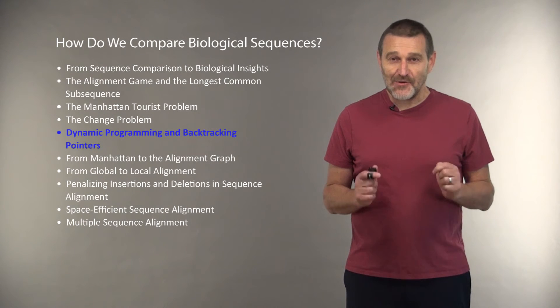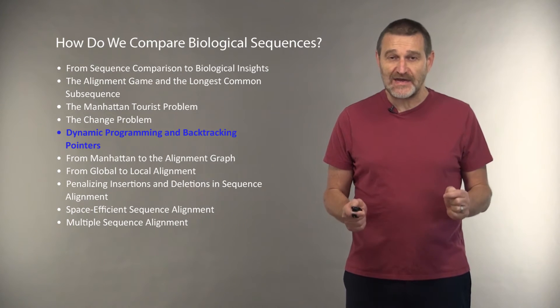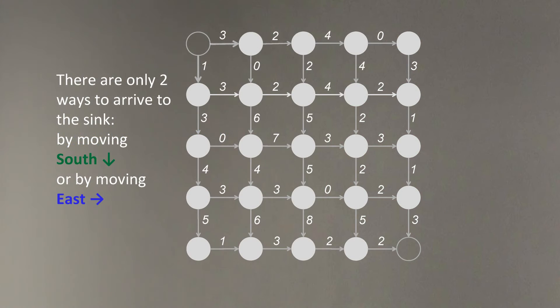We are now ready to learn how dynamic programming algorithms work for finding optimal paths in graphs. Let's start from this graph and let's try to figure out how to move in this graph to reach the sink with the maximum number of attractions.